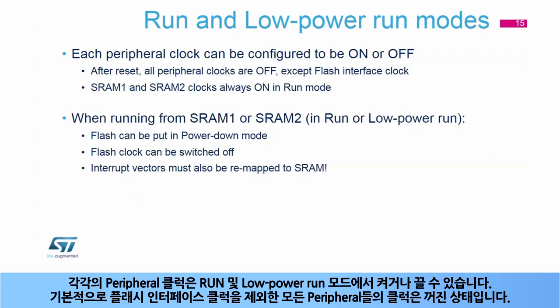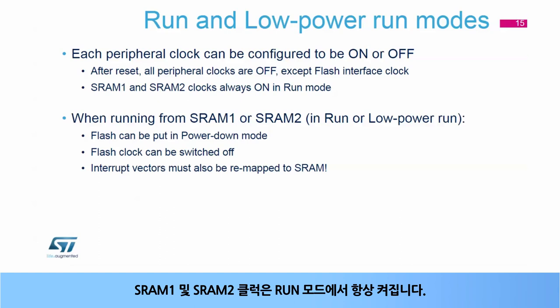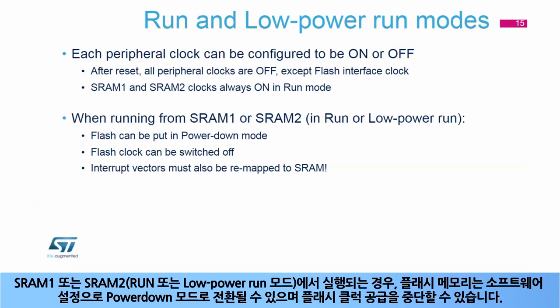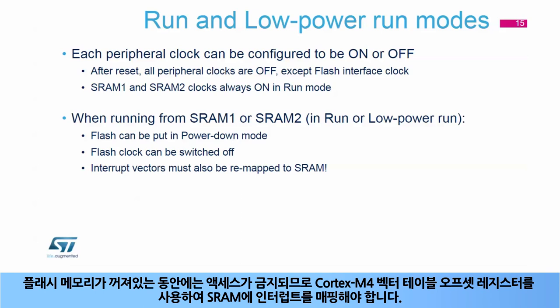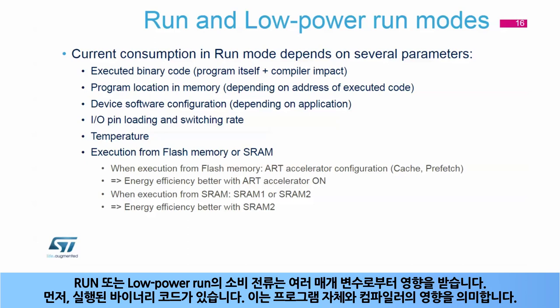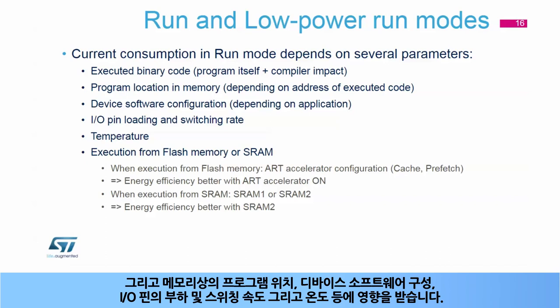Each peripheral clock can be configured to be on or off in run and low-power run modes. By default, all peripheral clocks are off except the flash interface clock. The SRAM 1 and SRAM 2 clocks are always on in run mode. When running from SRAM 1 or SRAM 2, the flash memory can be put in power-down mode by software and the flash clock switched off. The flash memory must not be accessed when it is switched off; consequently, interrupts must be mapped in SRAM using the Cortex-M4 vector table offset register. The current consumption in run or low-power run modes depends on several parameters: the executed binary code, program location in memory, device software configuration, I/O pin loading and switching rate, and temperature.